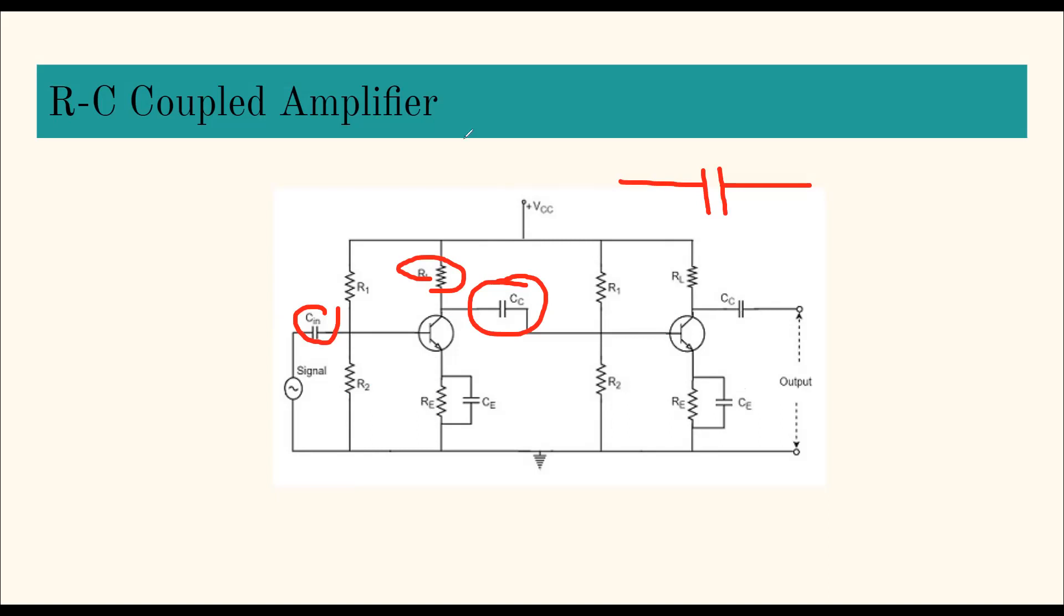Now let us go to the working of this RC coupled amplifier. When an AC input signal is applied to the base of the first stage, it gets amplified and appears at the collector. The amplified signal appears at the collector load RL, which is then passed through the coupling capacitor Cc to the next stage, to the base. This now becomes the input to the second stage. Same thing - amplification, and the output, the second amplified output, is seen at the collector again.